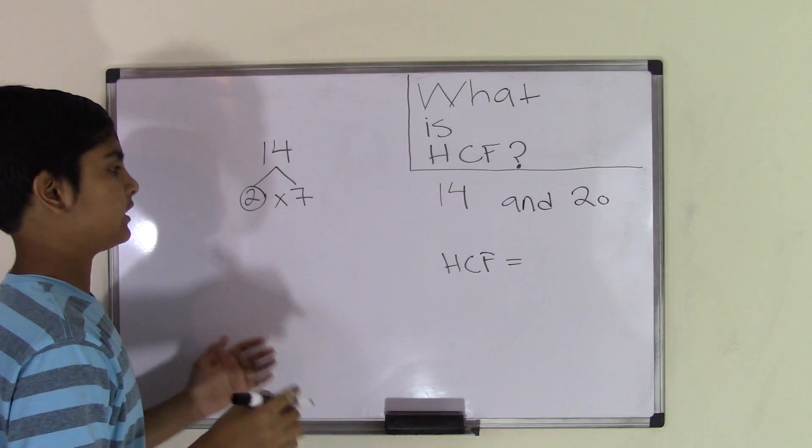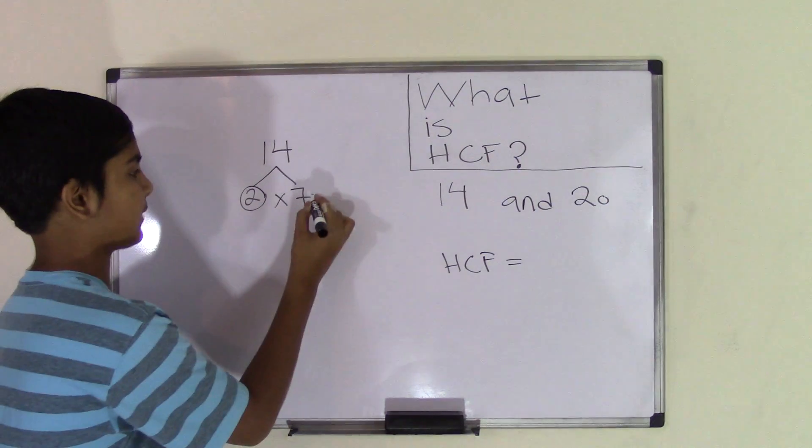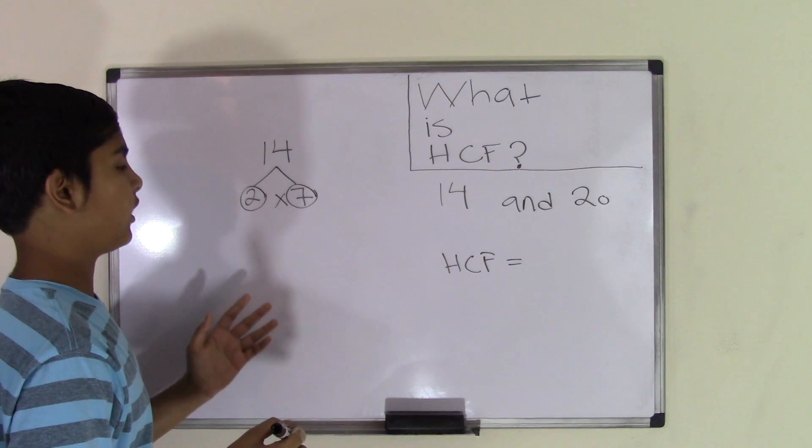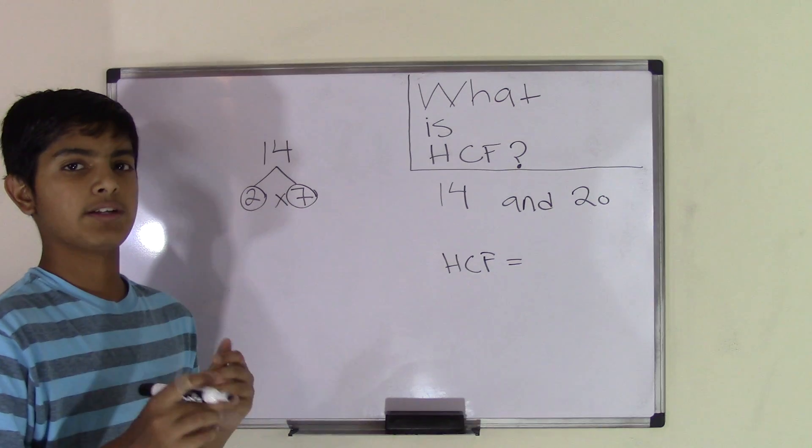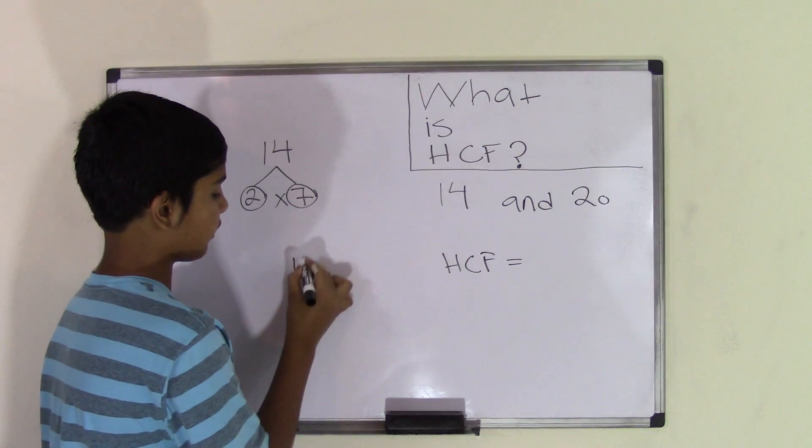Now the number 7 is a prime number. I'm sorry, I made a mistake. So now we have all the factors of 14 since we have at the end two numbers circled. So 2 and 7 are the factors of 14.